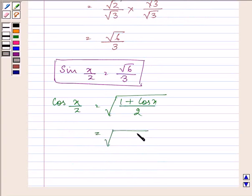So proceeding on, we have the value as after taking LCM, it will be (3 - 1)/2 which gives us the value of 1/√3.